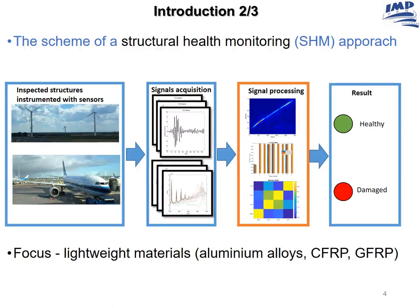The damage assessment falls into the broader scope of Structural Health Monitoring. The Structural Health Monitoring concept uses a network of sensors deployed on a structure. Signals from such sensors are gathered, processed, and at the end you would like to know if the structure is safe to use — so-called healthy — or if it is unsafe, damaged and needs repairing. The focus of my talk will be structures made of lightweight materials such as aluminum alloys, CFRP and GFRP composites.